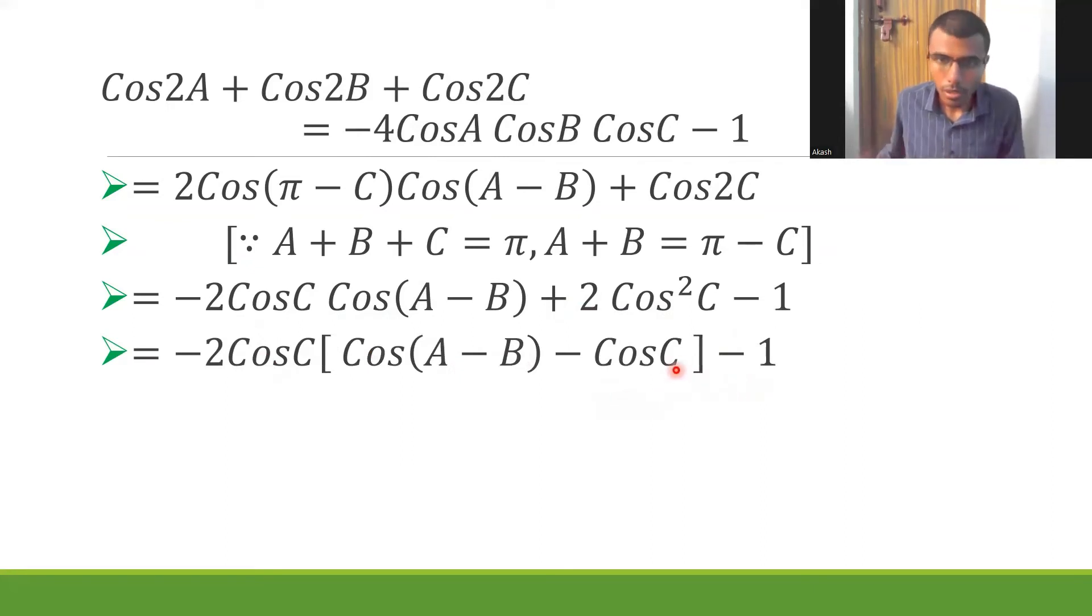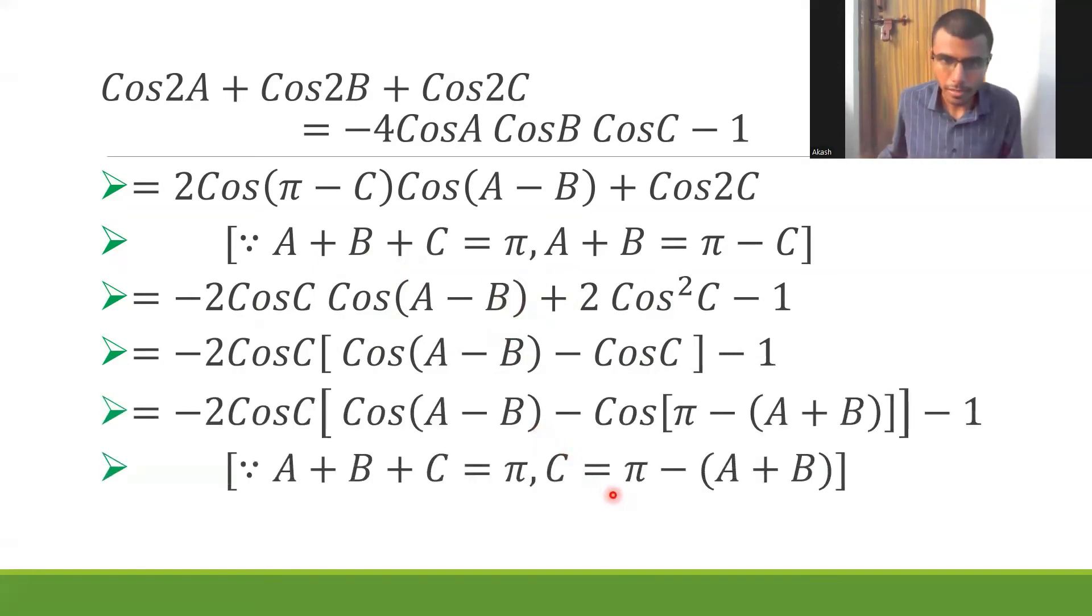As I mentioned, now I want to write this C in terms of A and B. Now here again, you know that A + B + C is π. Keep C to the left side, so C would be nothing but π - (A+B). That's what I'm going to write. And again, don't forget to mention the reason that since A + B + C is π, C is π - (A+B). Let's not give any chance for examiner to reject marks.